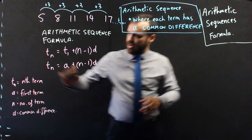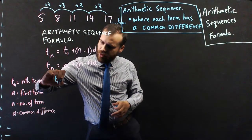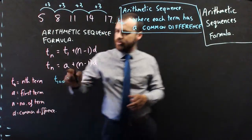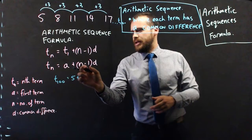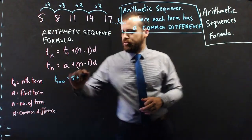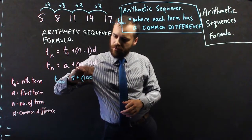Well, using our formula, T100 equals the first term, 5, plus n minus 1. So, n is 100 minus 1.